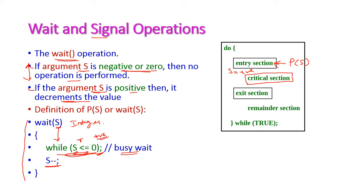What is the meaning of this? If S value is negative or zero, that means some process is already in the critical section executing it. So the current process has to wait until that process completes. Hence this is called the wait operation.